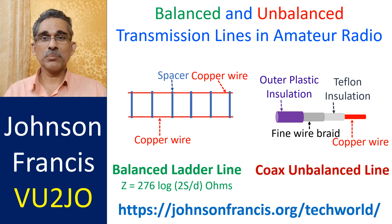A typical unbalanced line is a coaxial cable, which has one central core separated from the other conducting sleeve by an insulator such as plastic or teflon. The sleeve is grounded at the transmitter. The current in the centre conductor and that on the inside of the shield of the coaxial cable are equal but opposite.